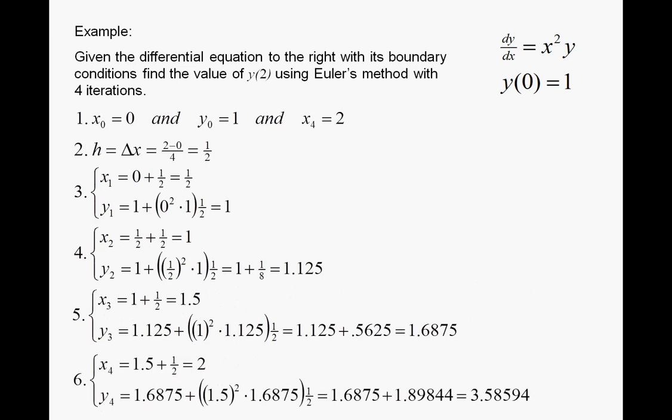So we have a worked example here. There's my differential equation. There's my boundary condition. So x0 is 0, x4 is 2. And we're going to divide into four iterations, four strips. And as you see, it's a fairly weak answer. So 2 minus 0 over 4 is a half.